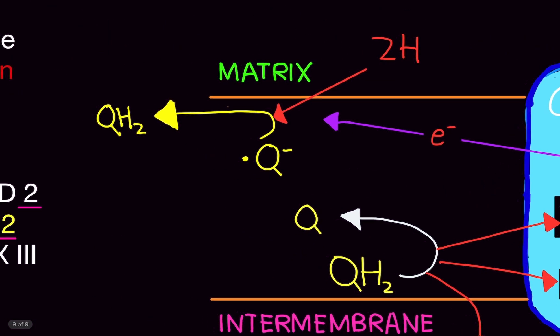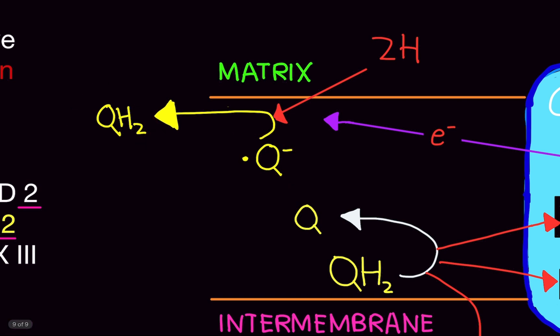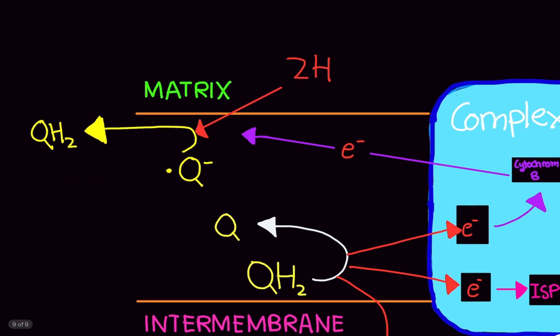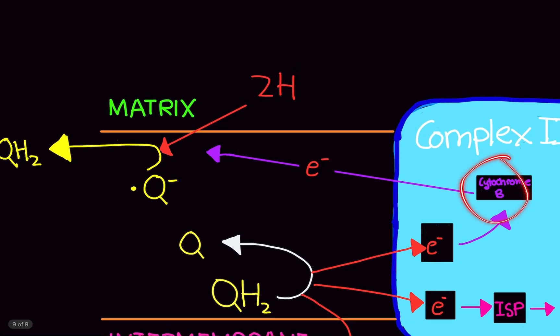To basically convert the semiquinone into ubiquinol. Now, in order for this to happen, we also need to take two protons from the matrix to make ubiquinol. So, additional, with the semiquinone, with this electron we got from cytochrome B, originally from here, we transferred it to here. Cytochrome B is holding on. The semiquinone now gets the electron.